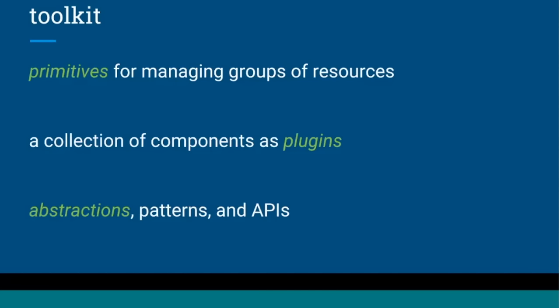InfraKit really just defines the configuration syntax and the use of configuration. As part of the toolkit, we offer a series of abstractions, patterns, and APIs — mostly the APIs relate to the plugins directly. This summarizes the different attributes of the system that make it a fit for the term 'toolkit': it's really a series of components you can use to accomplish something, but not necessarily something intended to be used directly that often.